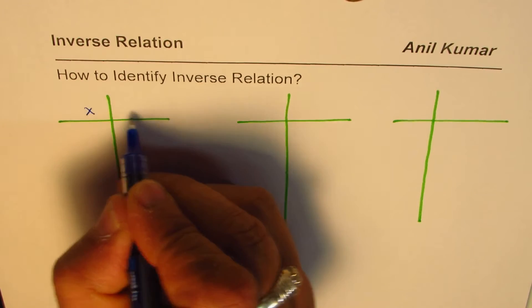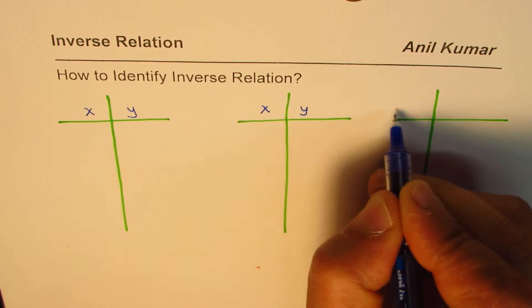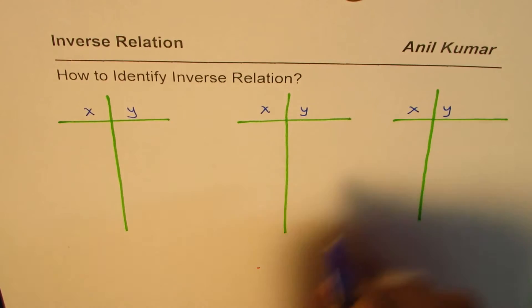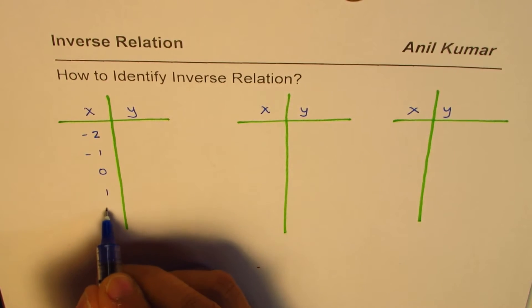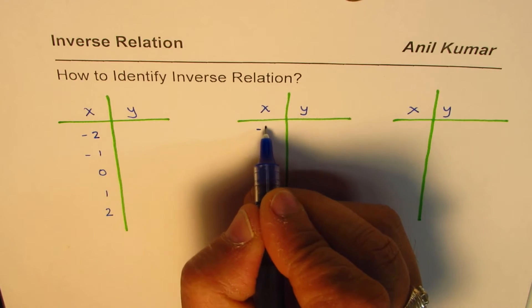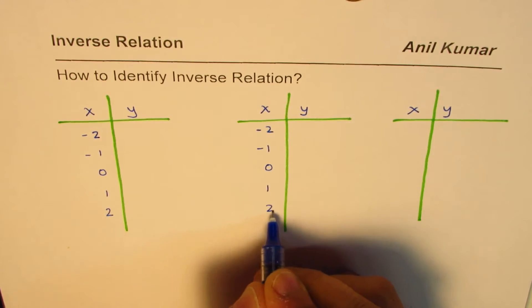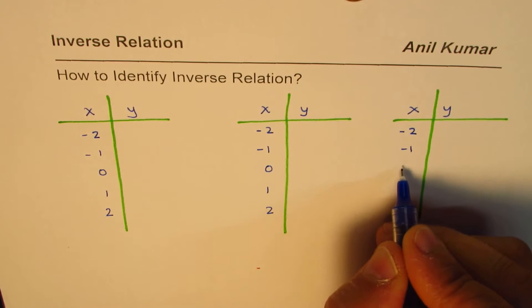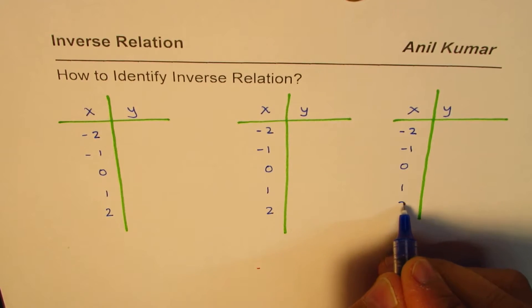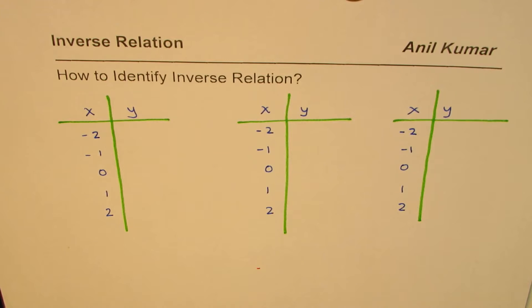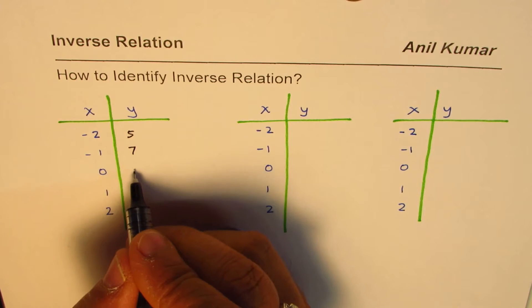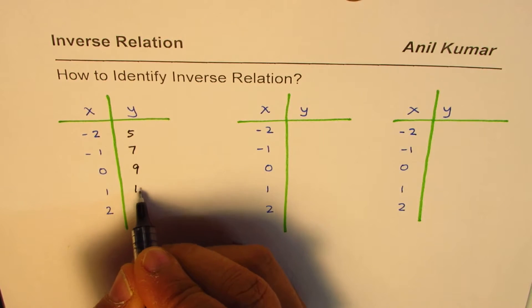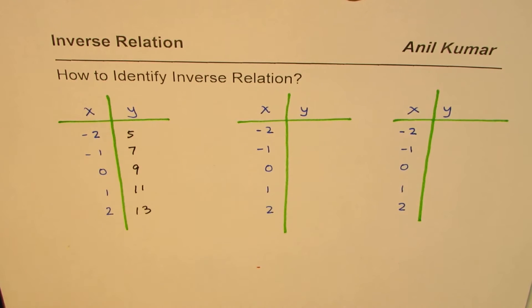We'll write some values where X is the independent variable and Y is the dependent variable. Let's take standard values: minus 2, minus 1, 0, 1, and 2 for X. These are standard values when you are sketching a line. Now if I write down Y values like 5, 7, 9, 11, and 13 — will that represent an inverse relation or not?